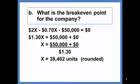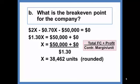Recall that when you use this equation method, you ultimately end up with the contribution margin method, which is total fixed cost plus profit divided by the contribution margin per unit. Algebraically, it just comes out in the wash when you use the equation method.